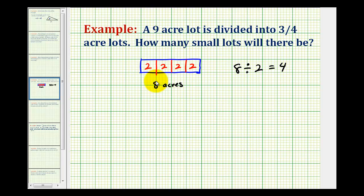So for this problem, if we want to know how many three fourth acre lots we can get from nine acres, we'll take the total of nine acres and divide it by three fourths of an acre. And this quotient will tell us how many smaller lots we can have.